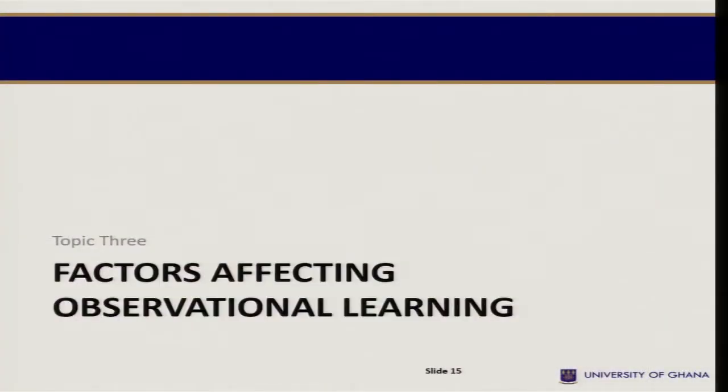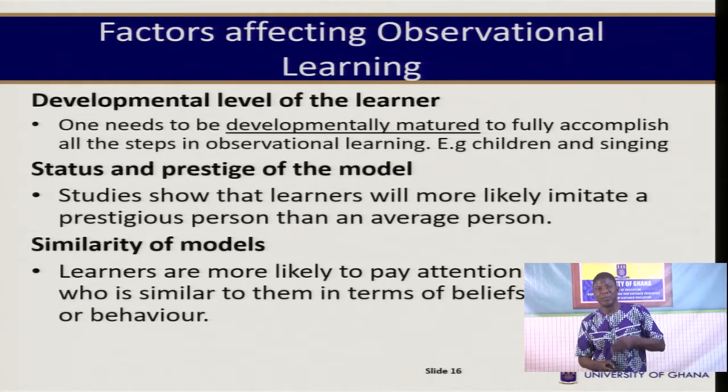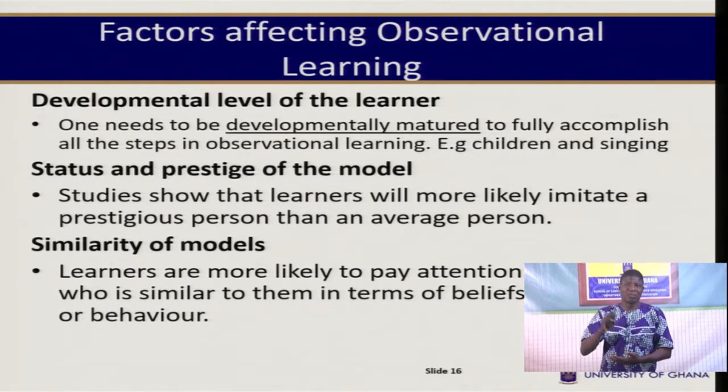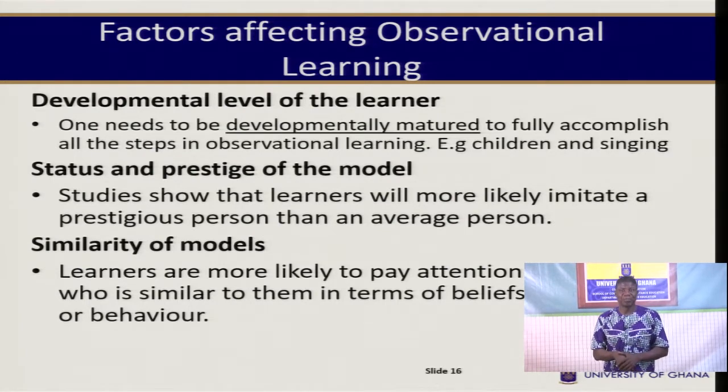The last topic for this session looks at factors that affect observational learning. The first is the developmental level of the learner. One needs to be developmentally mature to fully accomplish all the steps in observational learning. For instance, a child may want to play football at an adult's level, but a child who is not mature will not be able to do so because of the lack of developmental maturity to engage in this behavior.